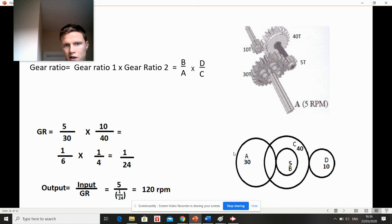So the same formula will apply. You'll have gear ratio equal to 5 over 30, times 10 over 40, which is D over C. So that's taken this gear set as one set here, which is 5 over 30, this gear set as another one, 10 over 40, multiplying both gear ratios together.